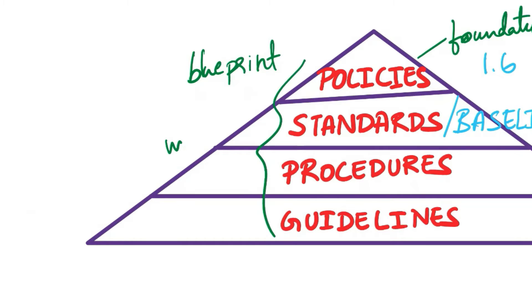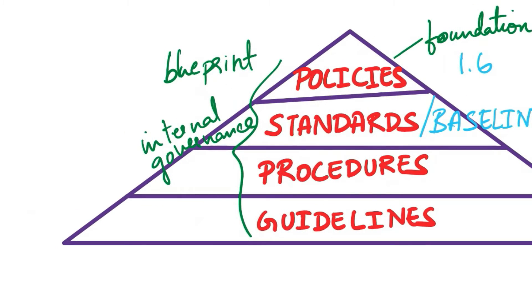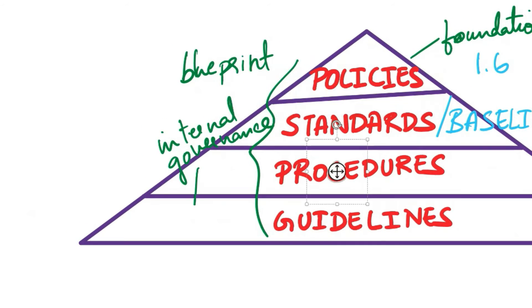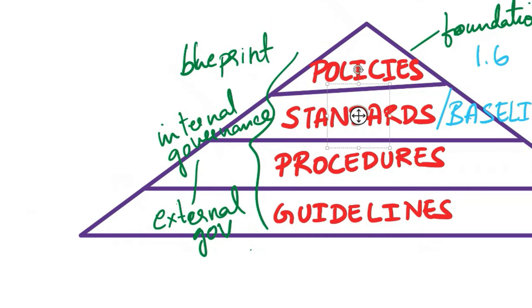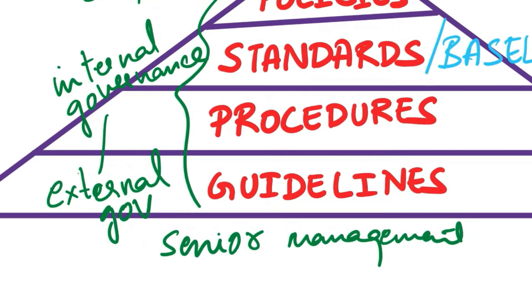Internal governance includes security policy, standards, procedures, and guidelines. This internal governance supports and articulates external governance such as laws and regulations. Governance is guided by senior management's oversight. Senior management defines security scopes, identifies protection needs, and understands business requirements and compliance obligations. Collaboration with security officers ensures the implementation of effective policies and controls.